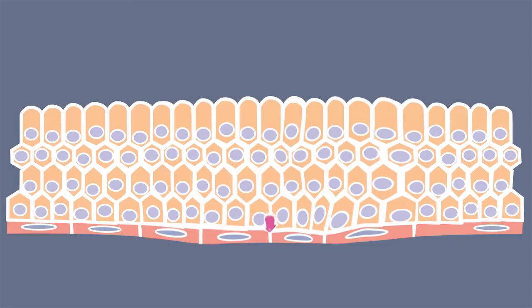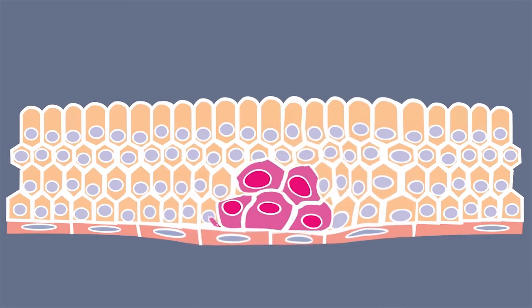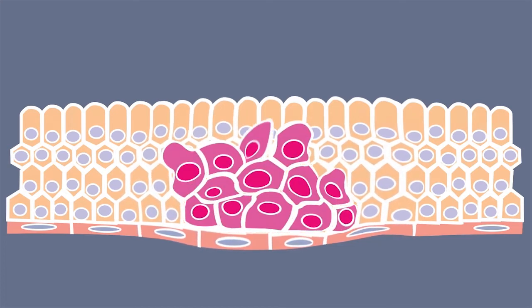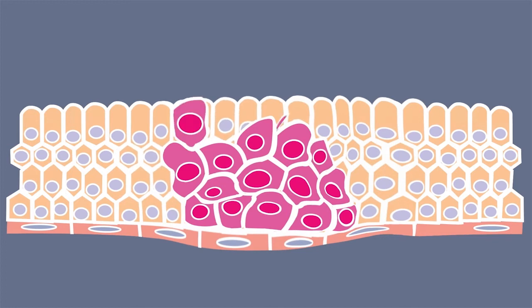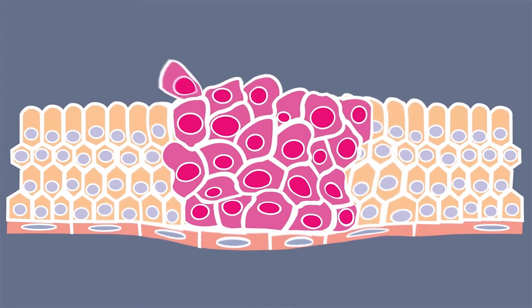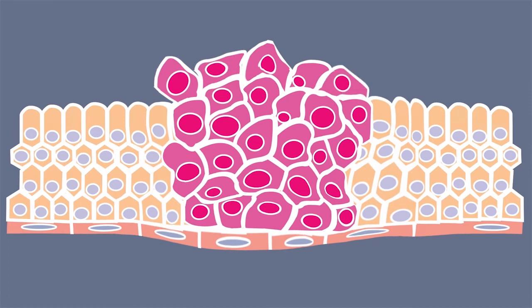Solid tumours: the cancerous cells clump together and form a lump which is called a tumour. Tumours can grow in any part of the body and tend to destroy the surrounding healthy organs. Sometimes tumours are non-cancerous or benign, meaning they are harmless.